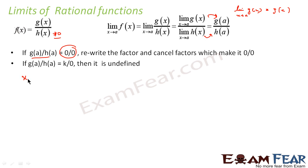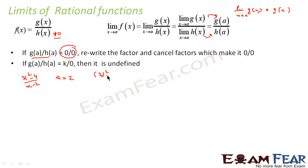For example, let's suppose we have the function (x² - 4) by (x - 2), and here a is equal to 2. Now if I put g(2) by h(2), that will become 2² - 4 by 2 - 2, which gives 0 by 0. Since it is 0 by 0 form, we can rewrite and cancel the factor.